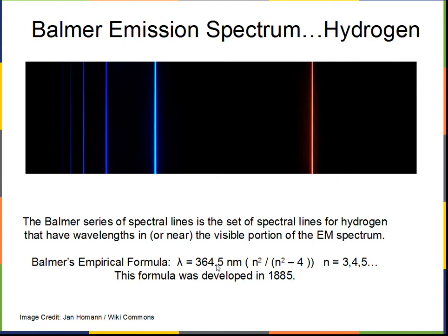This formula says any wavelength you want can be calculated if you start with 364.5 nanometers multiplied by the quantity n squared divided by the quantity n squared minus 4. But n is restricted—it's quantized to integers that start with 3: 3, 4, 5, etc. We can't put 2 in here because 2 squared minus 4 would be zero.